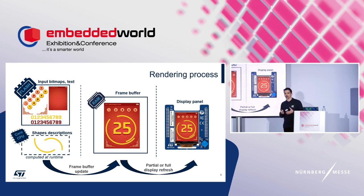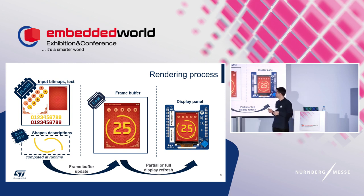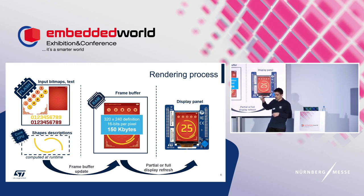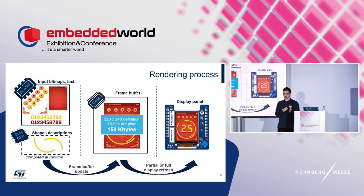The first step of the rendering process, after gathering all information to build the scene, is to update the frame buffer and transfer it to the display. In a microcontroller that embeds an LCD/TFT controller, the frame buffer is constantly sent to the display — but this is not possible on an entry-level microcontroller. The frame buffer size is screen resolution multiplied by color depth in kilobytes — for a small screen that's 150 kilobytes of RAM.